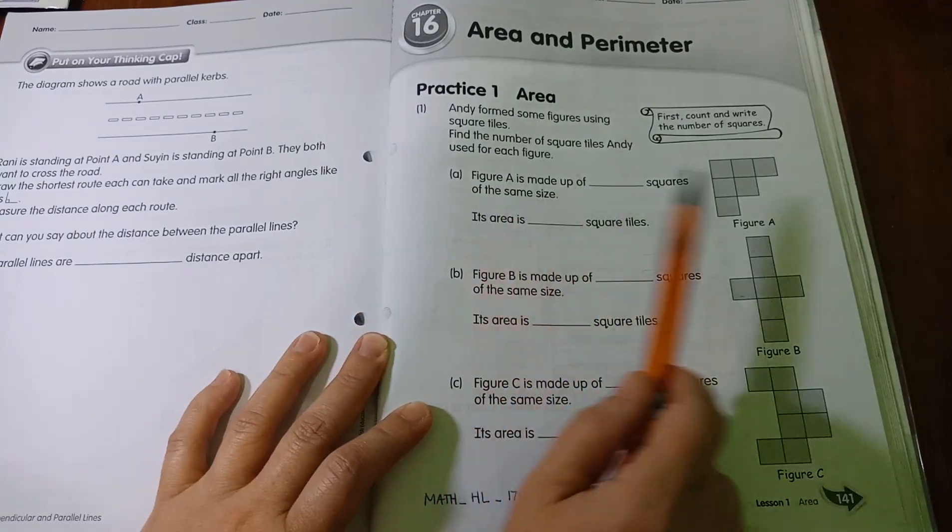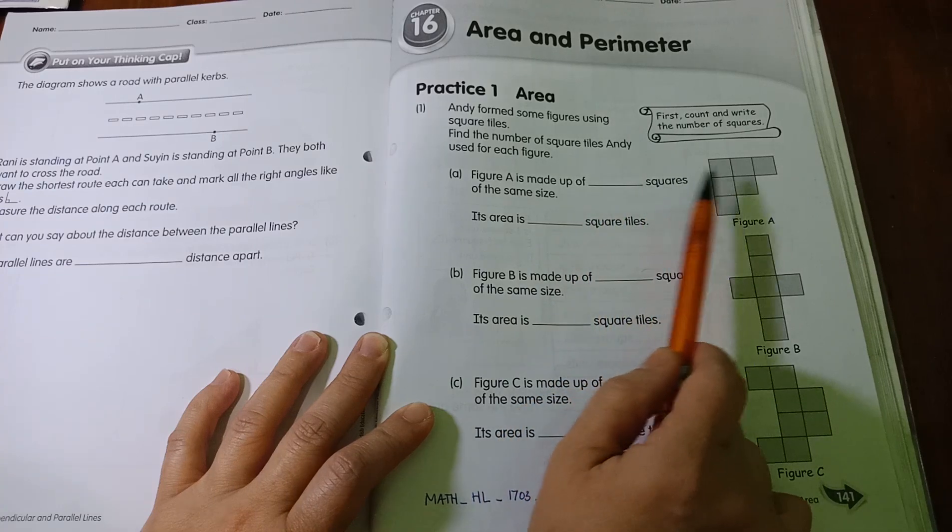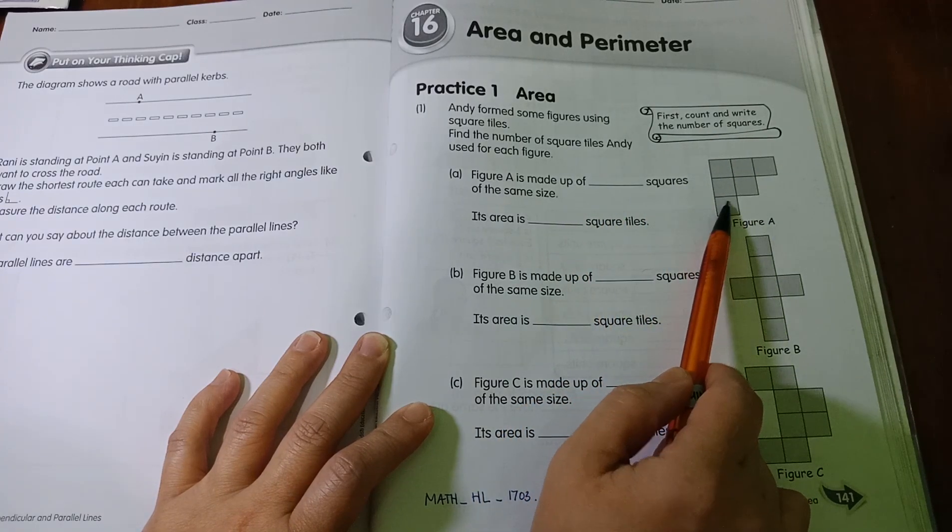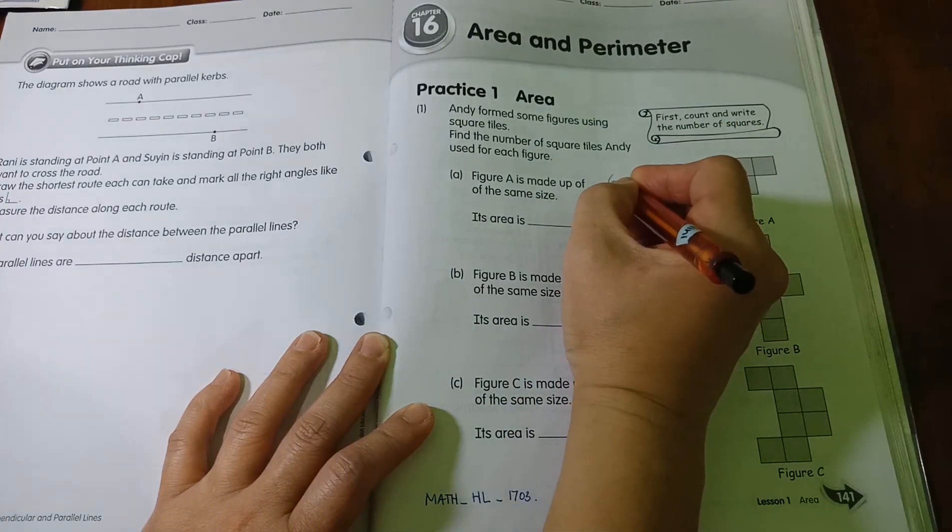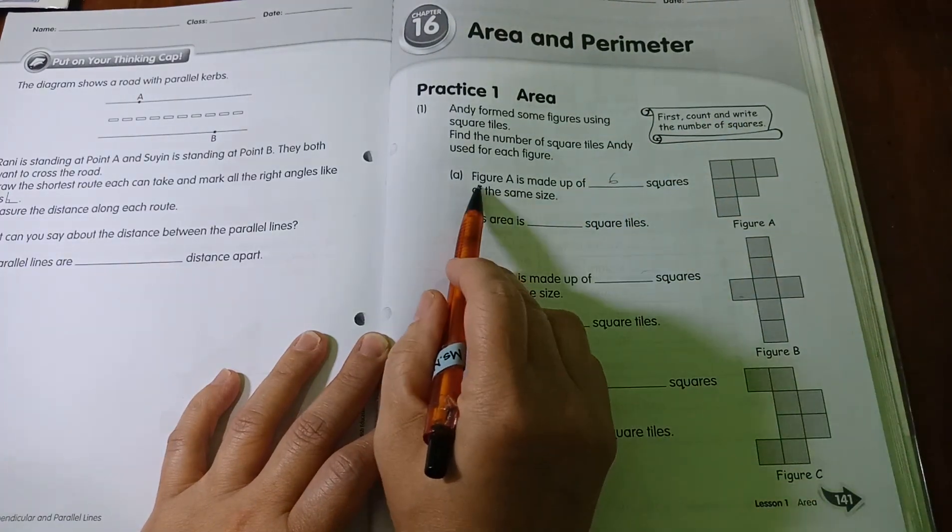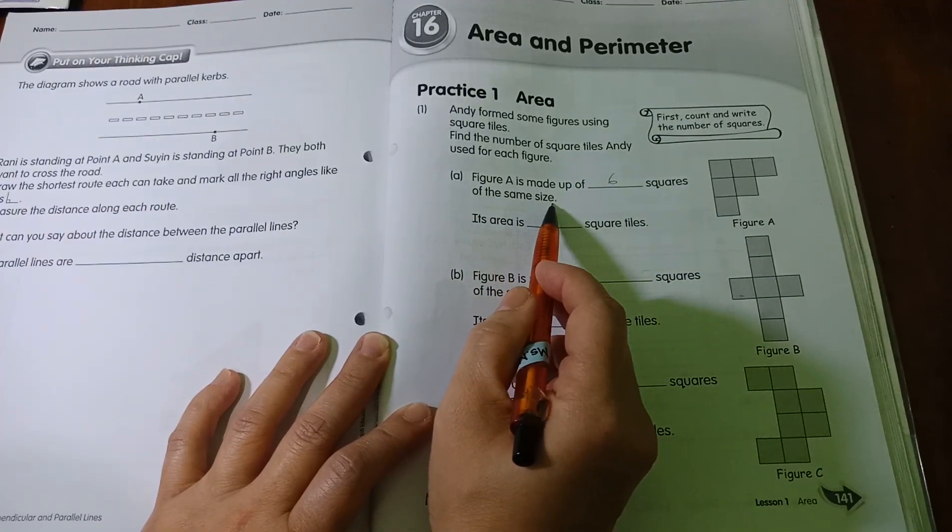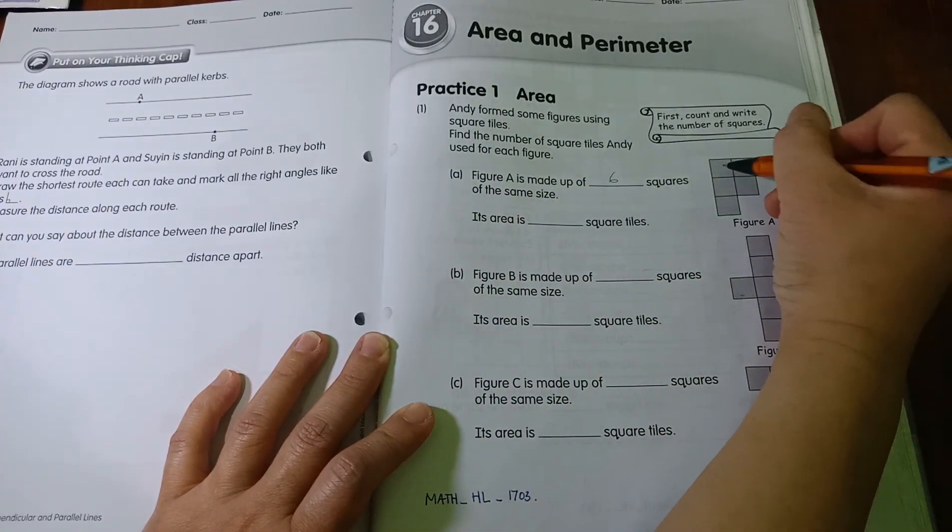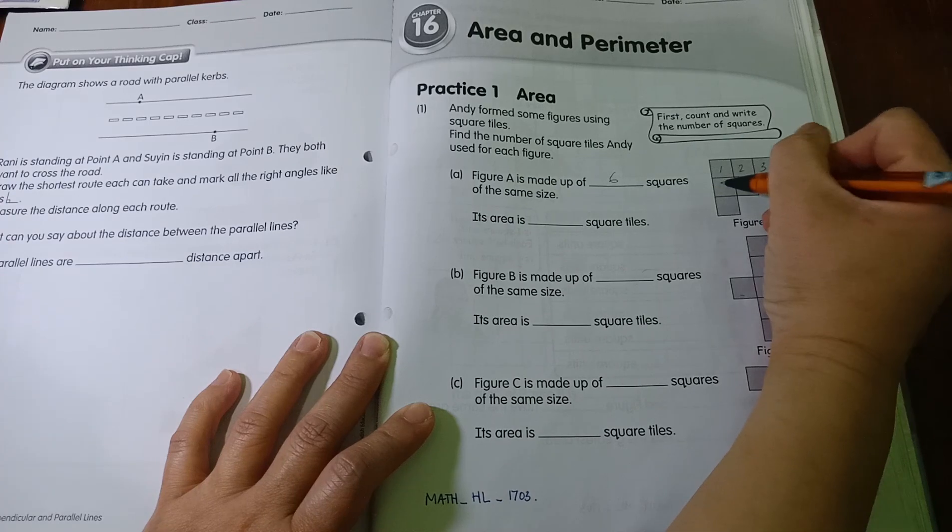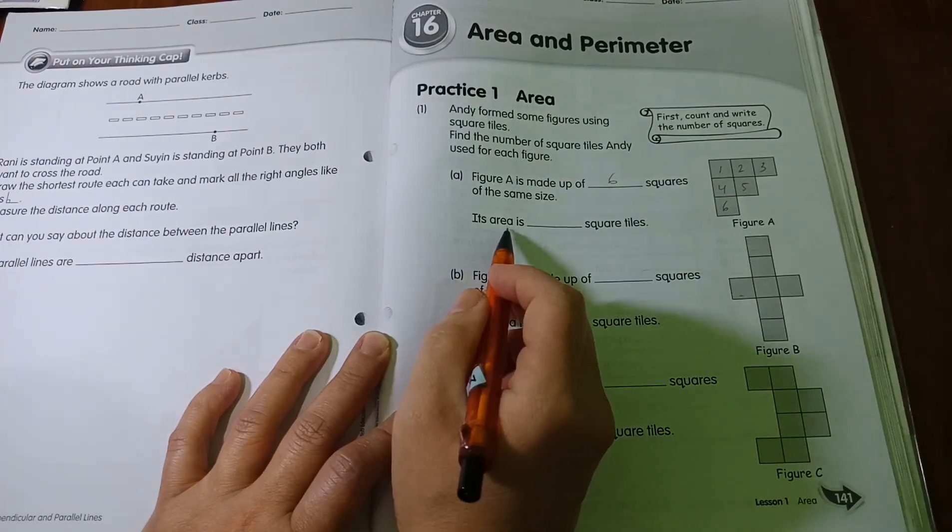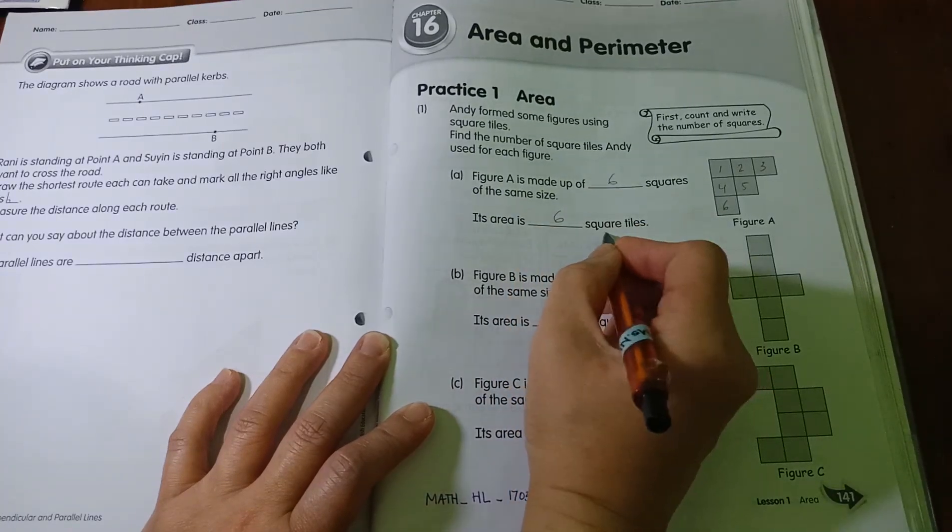So, figure A, which is this is figure A, is made up of... now we're going to count how many squares are there. 1, 2, 3, 4, 5, 6, then you write 6 squares over there. Figure A is made up of 6 squares of the same size. So, its area is 6 square tiles.